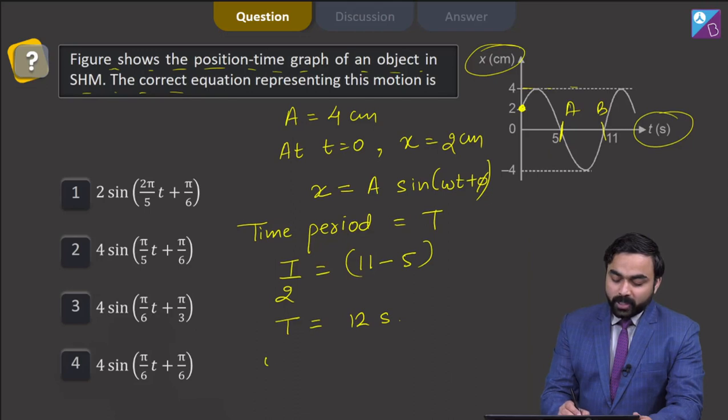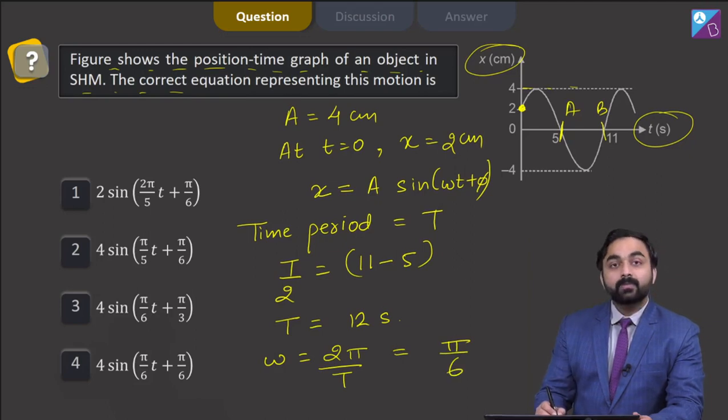So, from here if I want to calculate the value of angular frequency, it will be equal to 2 pi by T, which is equal to pi by 6.